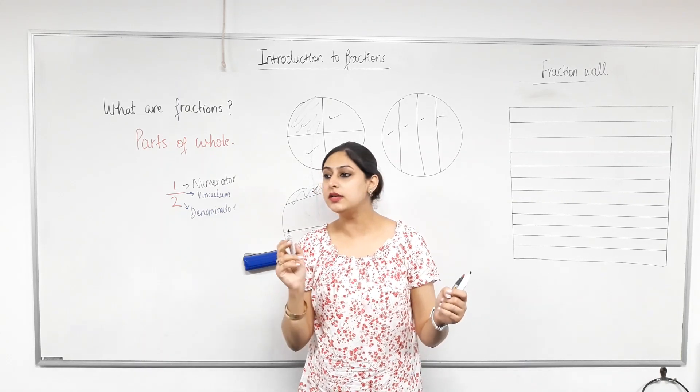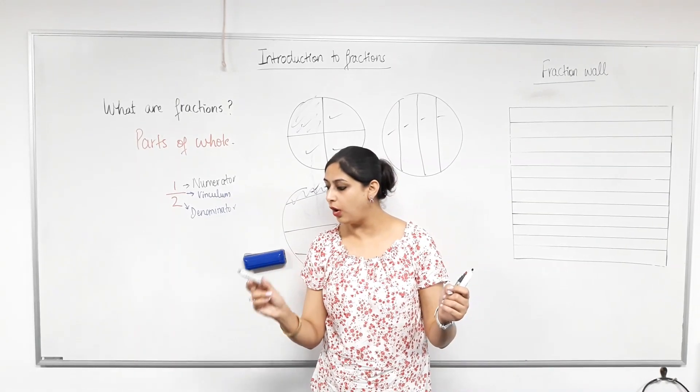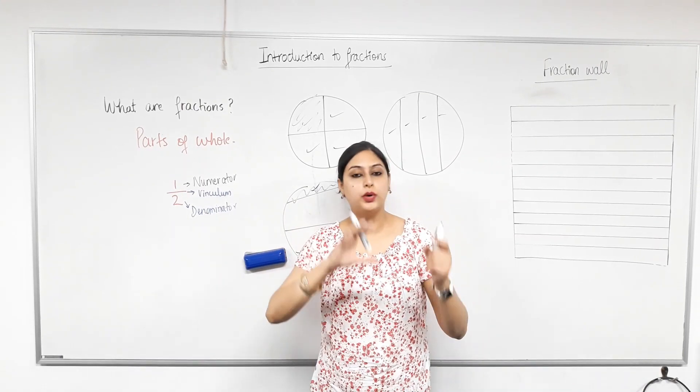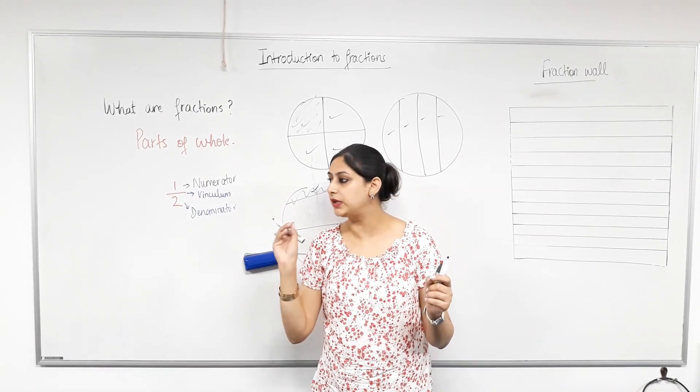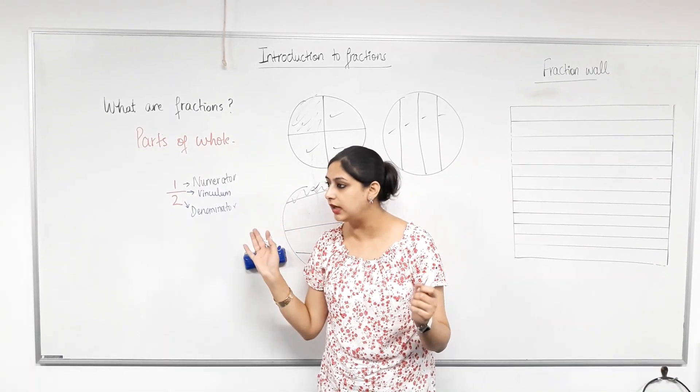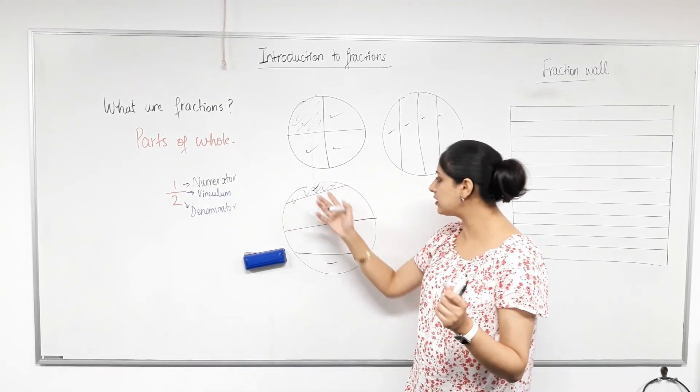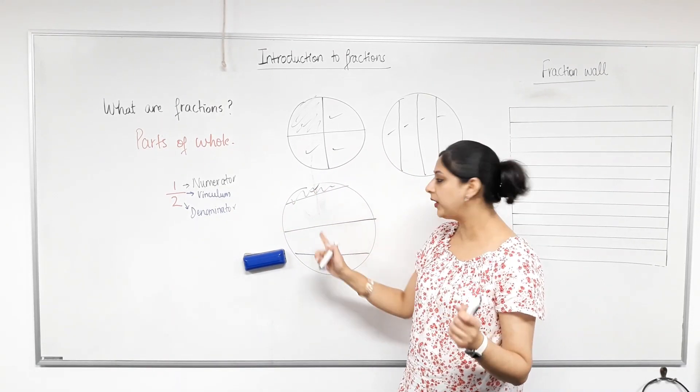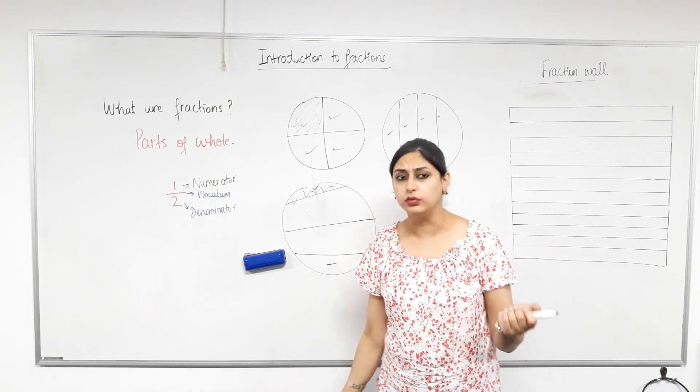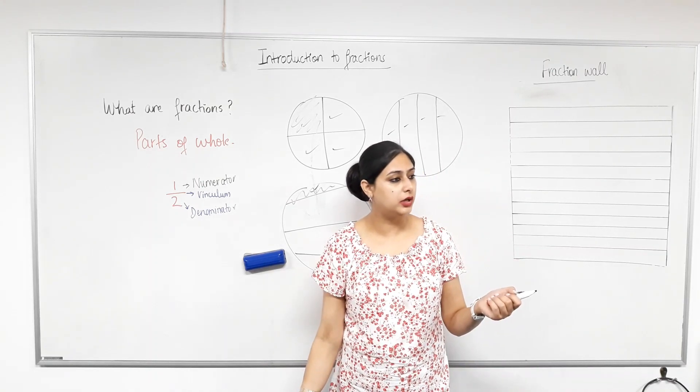Yes. So when you are dividing parts of a whole, the number of parts, whatever parts you are dividing, they must be the same size. Is that clear? Yes. We can clearly see. Otherwise, this is not the same as this, is it? We can't say this is a quarter of a pizza, is it? No.